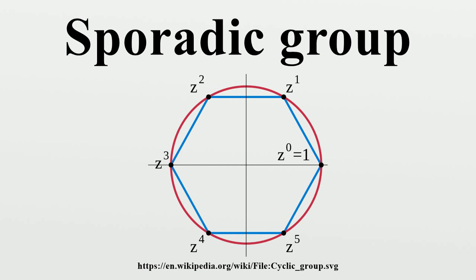The sporadic groups also have a lot of subgroups which are not sporadic, but these are not shown on the diagram because they are too numerous.